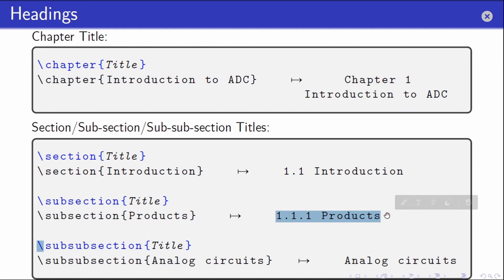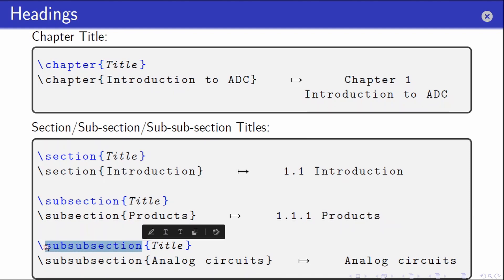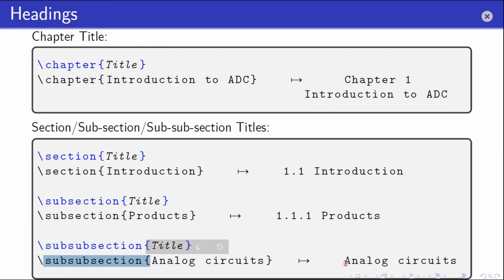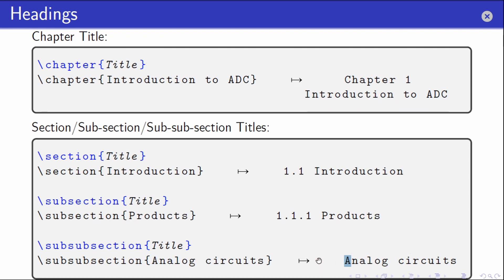One can step further down the hierarchy using the \subsubsection command. This is the last command — there is nothing below this. However, when using this command the title appears without any numbers at the front, and this is the default behavior of the book document class.